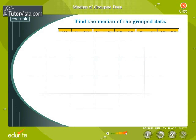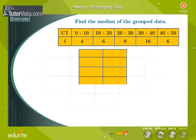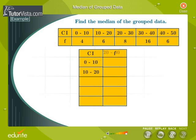Find the median of the grouped data from the following frequency distribution table. We first make a cumulative frequency table.